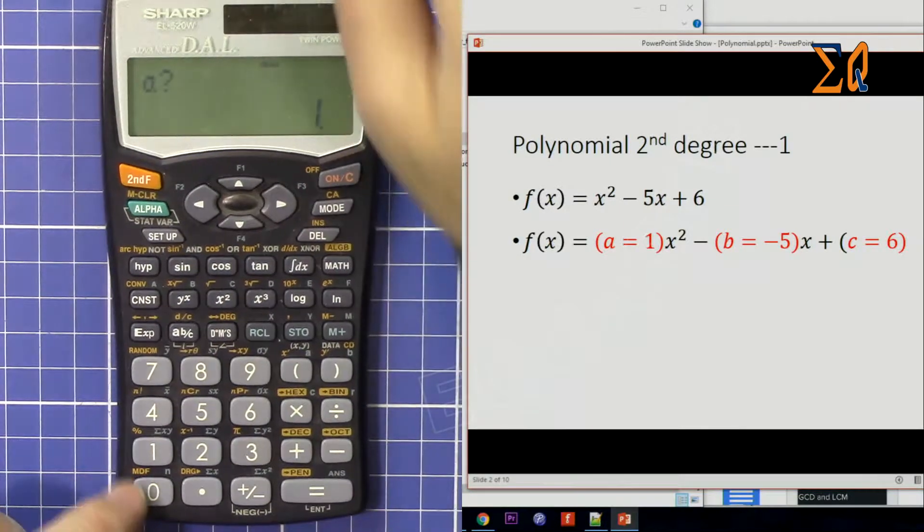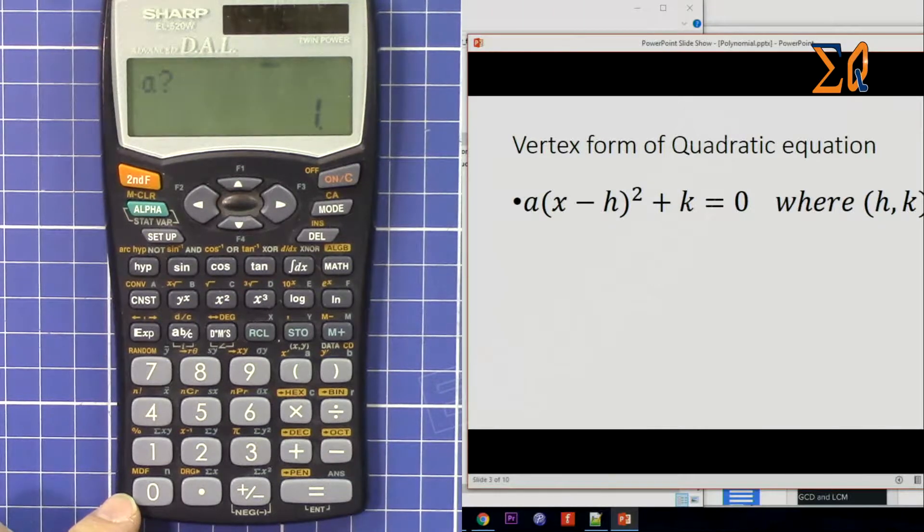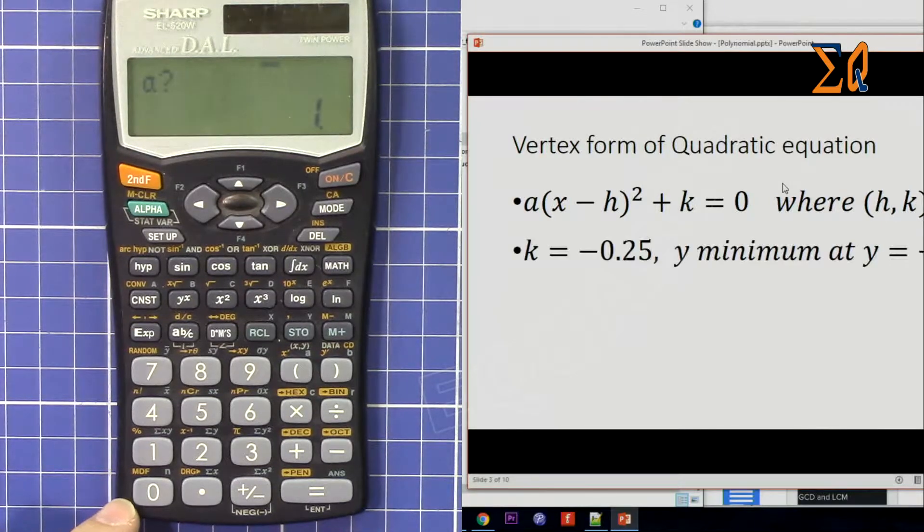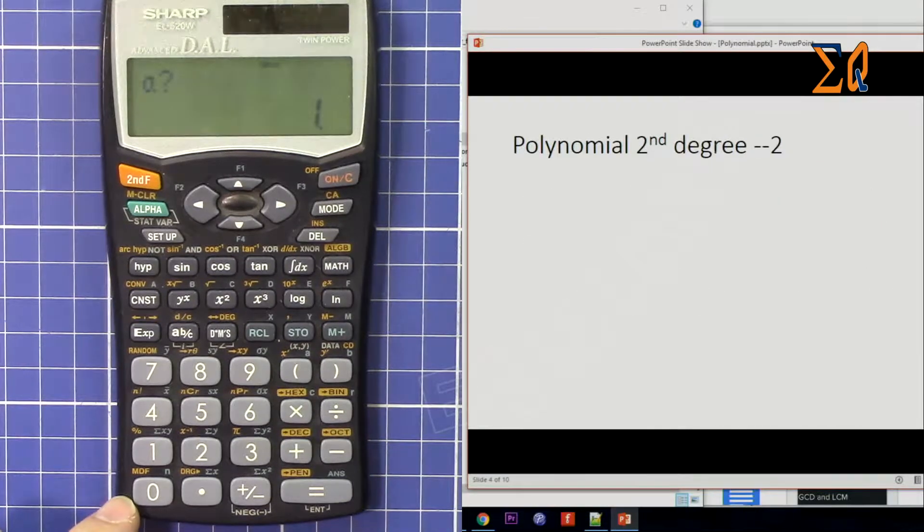Now some calculators also give the vertex form of the quadratic, the values for h and k. This calculator doesn't. So now let's do another example.